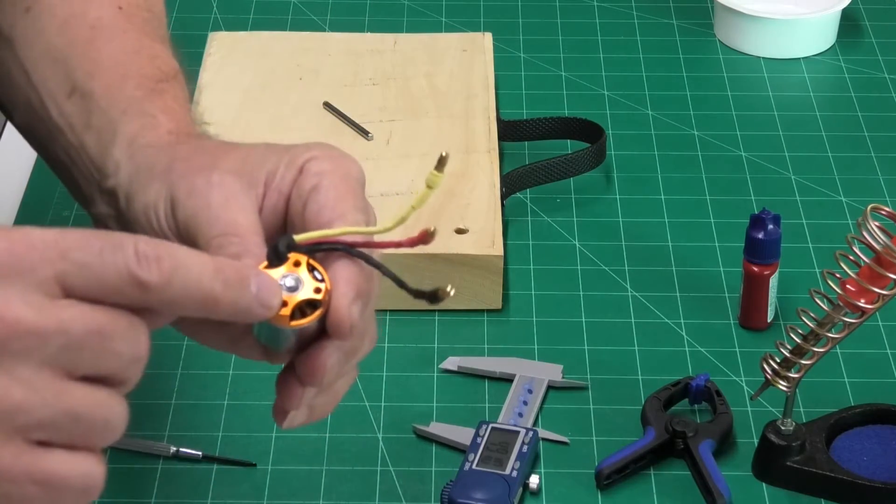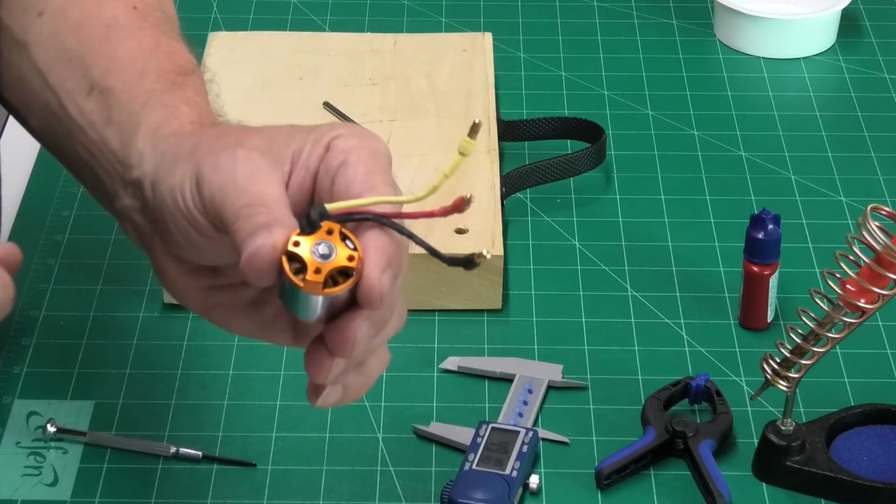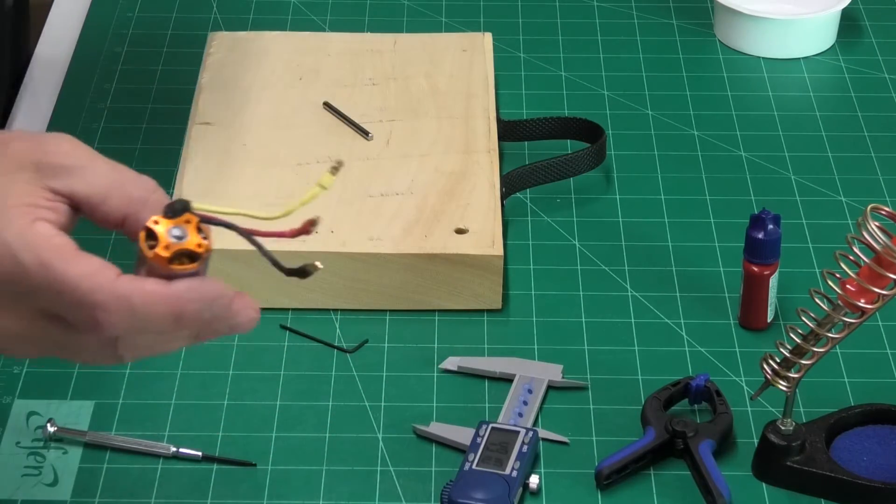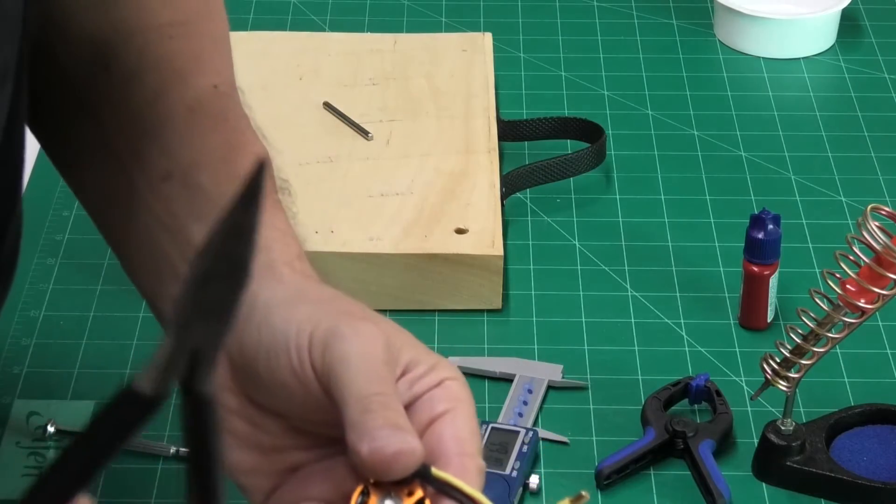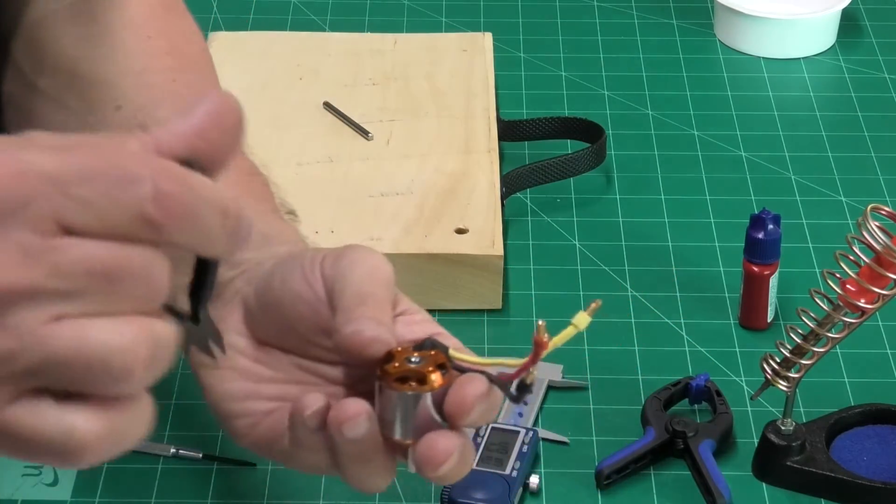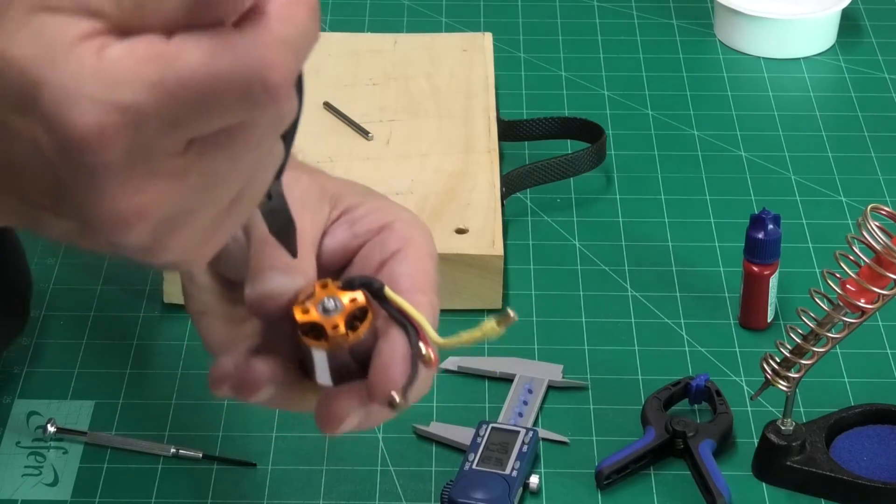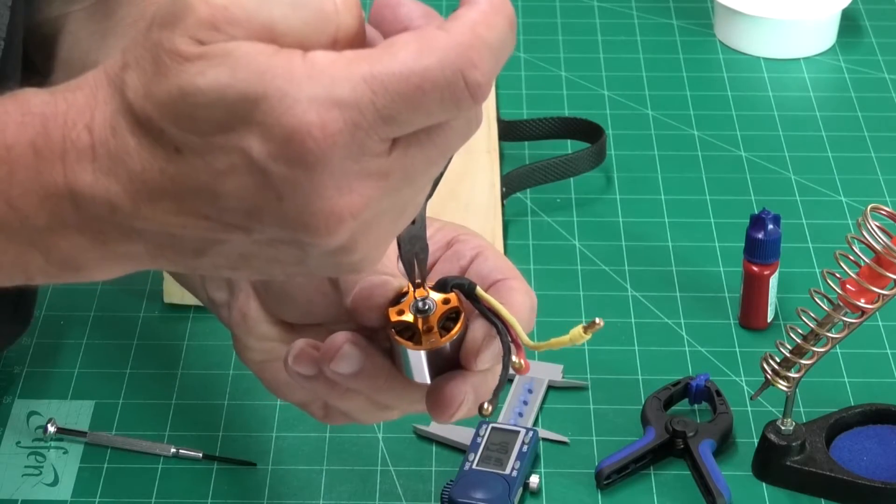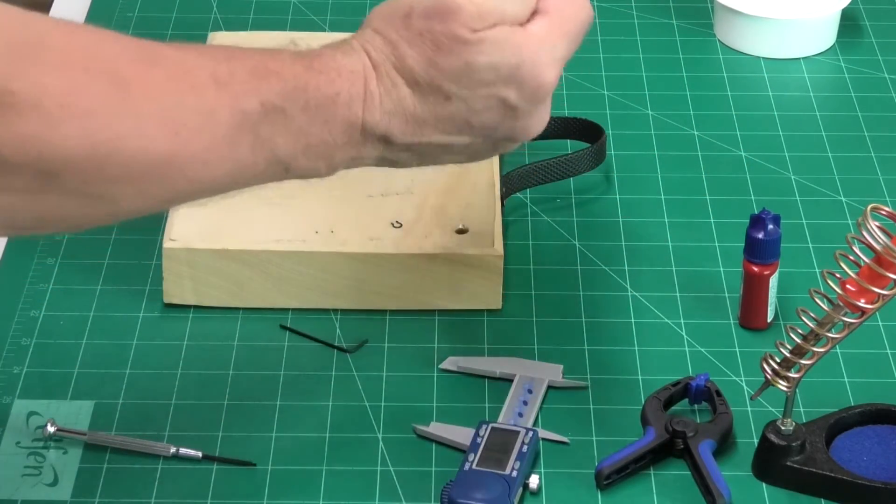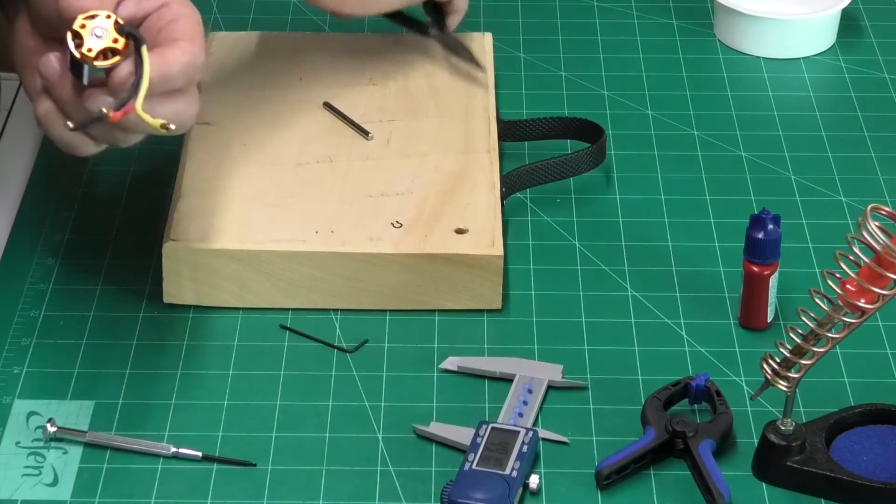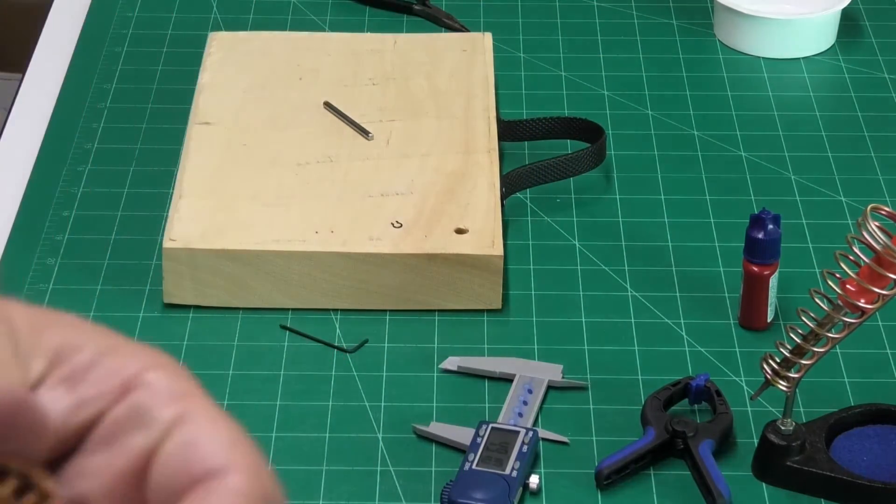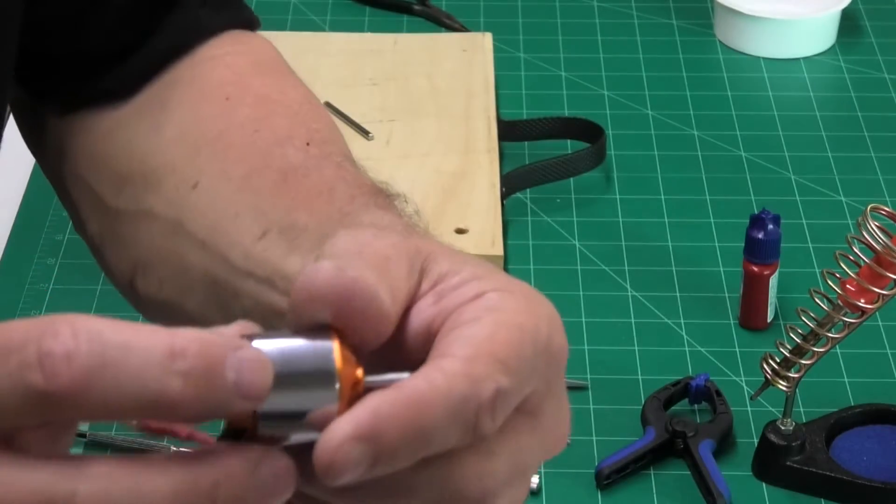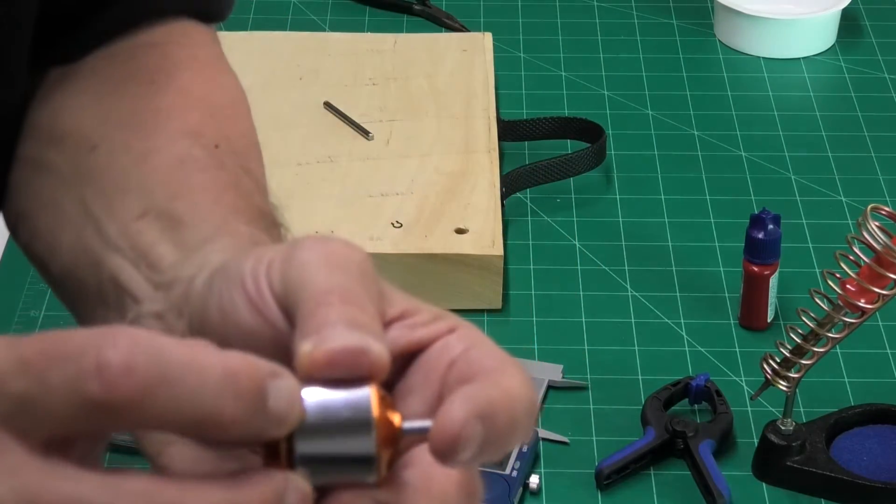So first thing we need to do is take the circlip off the back. Okay. I haven't got any proper circlip pliers, unfortunately. So what I'm going to use is a pair of very fine needle nose pliers and just hook those into the back of the circlip and lift it off. It's just as good as using some proper circlip pliers.